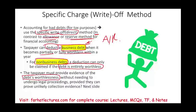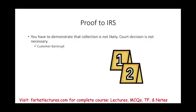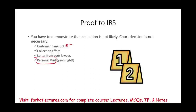The taxpayer must provide evidence of the debt's worthlessness — whether business or non-business — without necessarily undergoing legal proceedings, provided they can prove unlikely collection. How do you determine an account is uncollectible? If the IRS questions your deduction, you need to show evidence: for example, the customer went bankrupt, you show your collection efforts — letters sent, phone calls made, your lawyer sending demand letters, or personal visits.